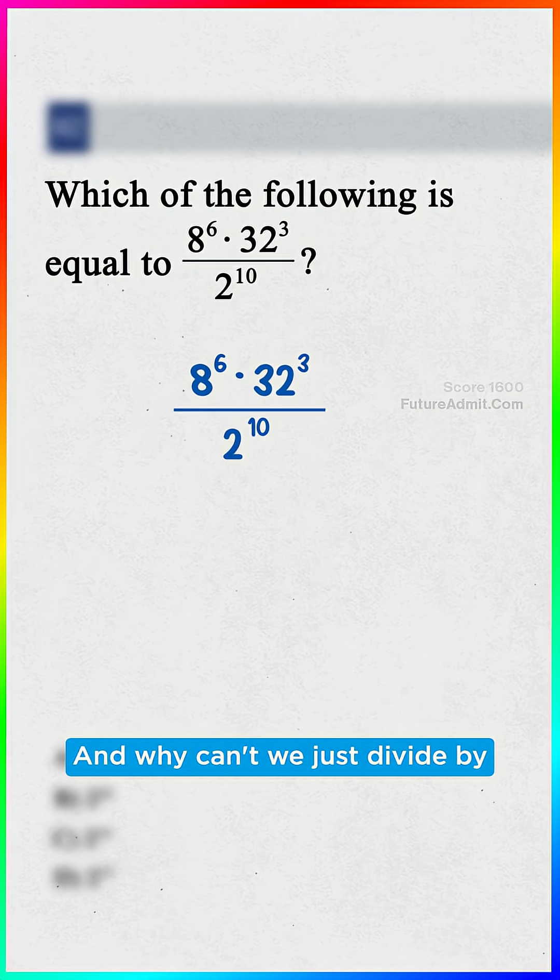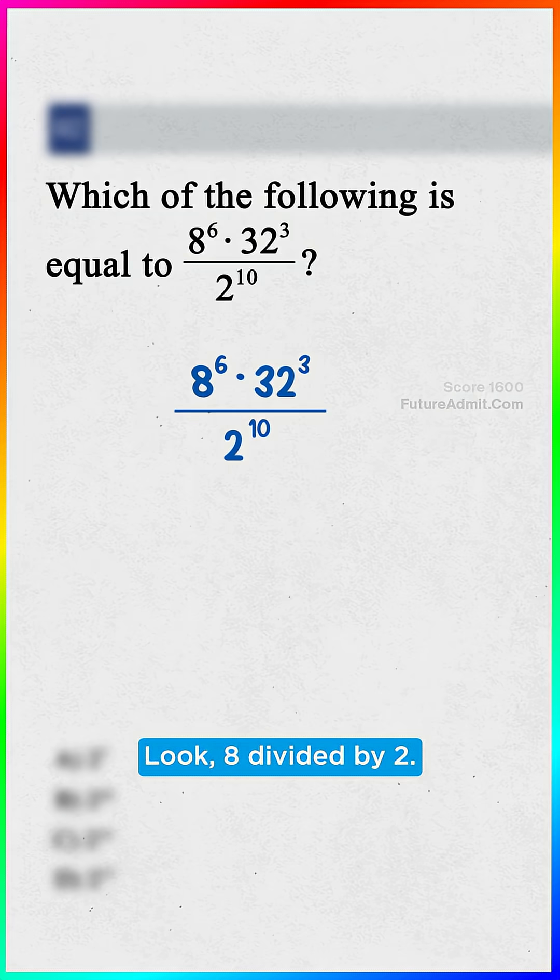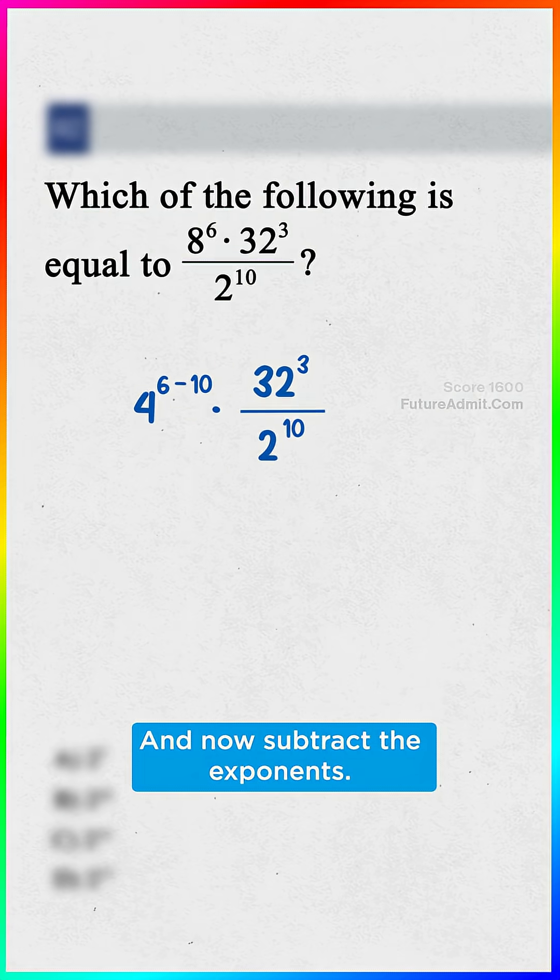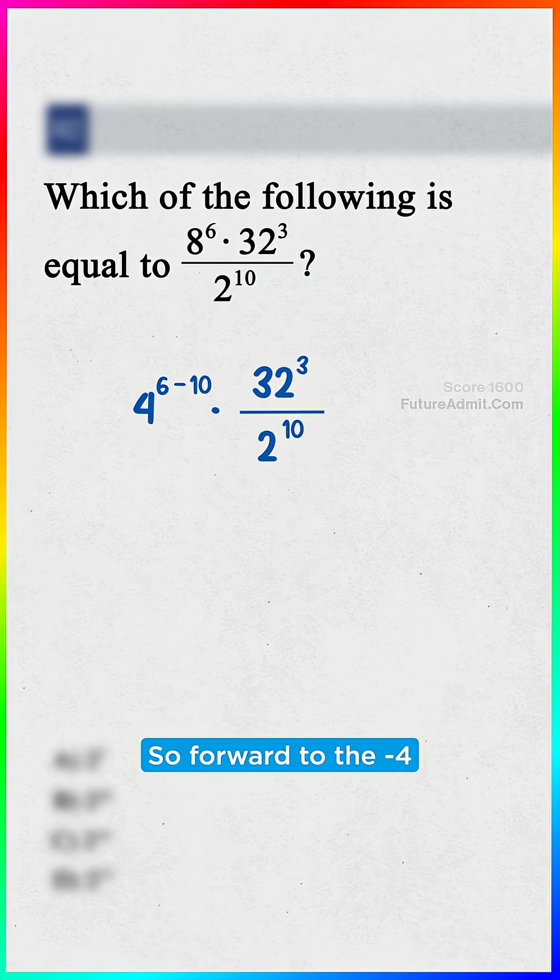But can't we just divide by 2 to clean it up? Look, 8 divided by 2, that's just 4, and now subtract the exponents, so 4 to the negative 4.